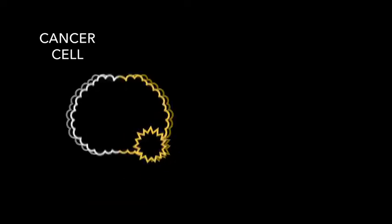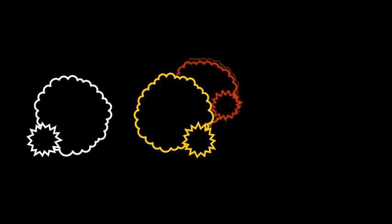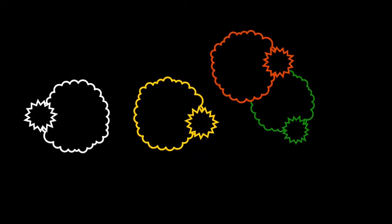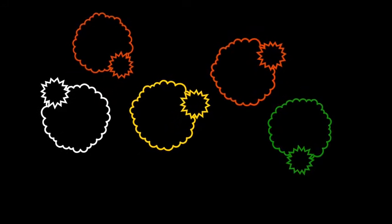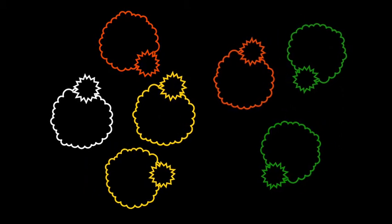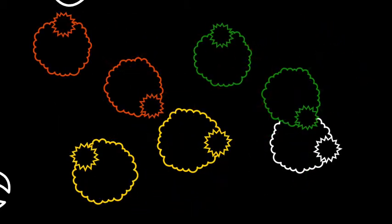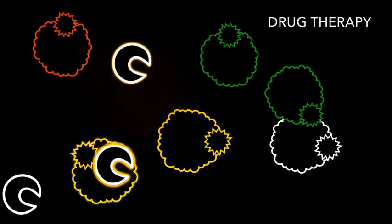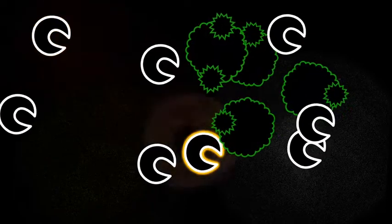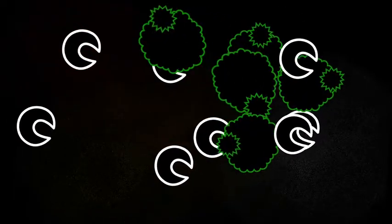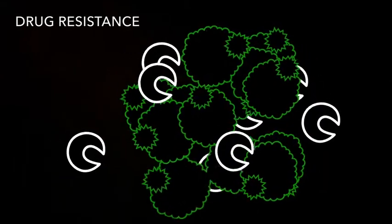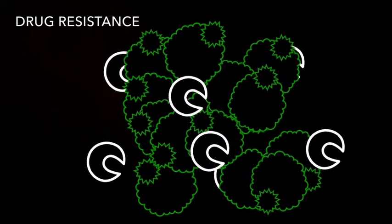Because cancer mutates constantly, not all cells within a tumor are the same. One way they may differ is how susceptible they are to individual anti-cancer drugs. When a tumor is treated with a drug or drug regimen, susceptible cells are killed. But cells that are not susceptible may survive. These cells multiply over time, resulting in a tumor that may now be resistant to the drugs used to treat it.